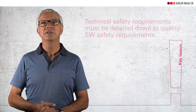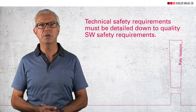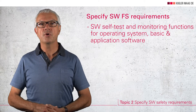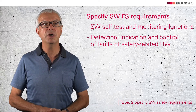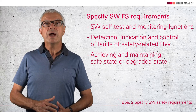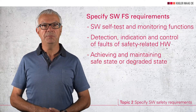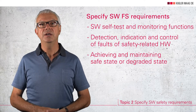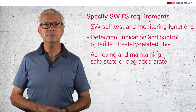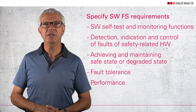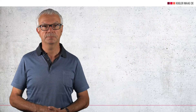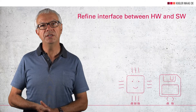We are now getting into the V-model for software development. Key lesson 5: technical safety requirements must be detailed down to high-quality software safety requirements in order to be implemented in the software. These include self-test and monitoring functions for the operating system, basic software, and application software. Requirements concern detection, indication, and control of faults of safety-related hardware. Requirements must be written for when and how a safe state — or at least a degraded state — can be achieved. This also covers fault tolerance requirements and how quickly error reactions must be implemented at runtime. Software development must also contribute to specifying the interface with the hardware.